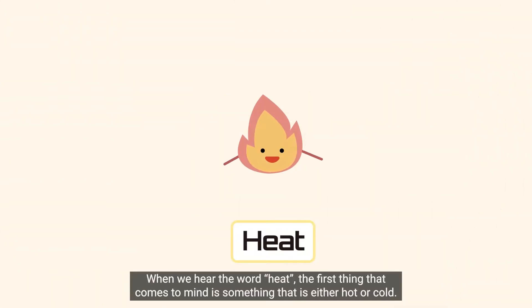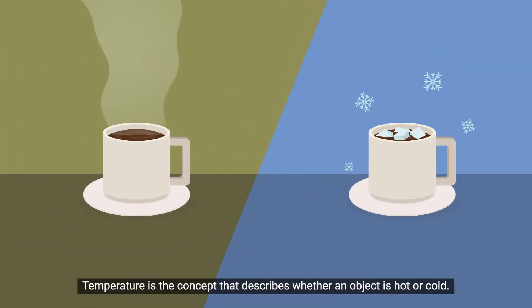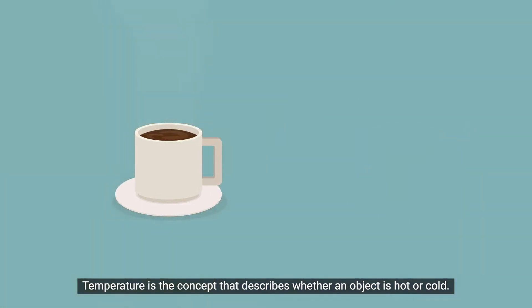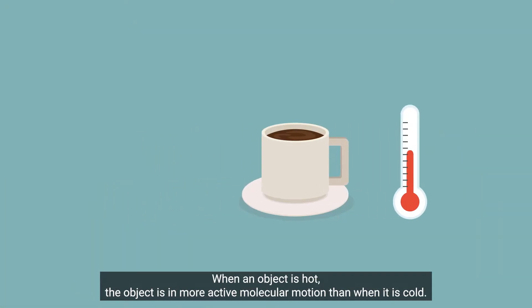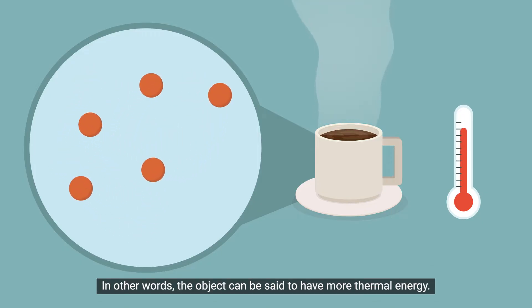When we hear the word heat, the first thing that comes to mind is something that is either hot or cold. Temperature is the concept that describes whether an object is hot or cold. When an object is hot, the object is in more active molecular motion than when it is cold. In other words, the object can be said to have more thermal energy.